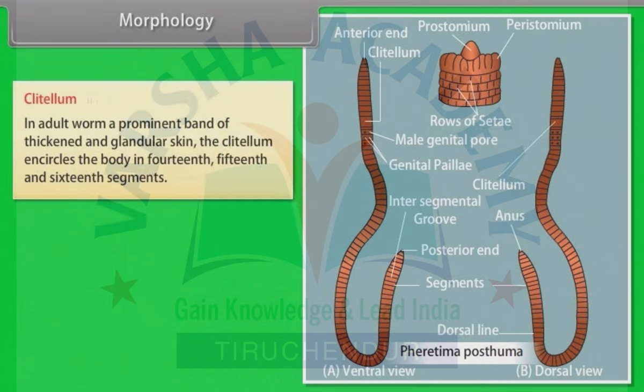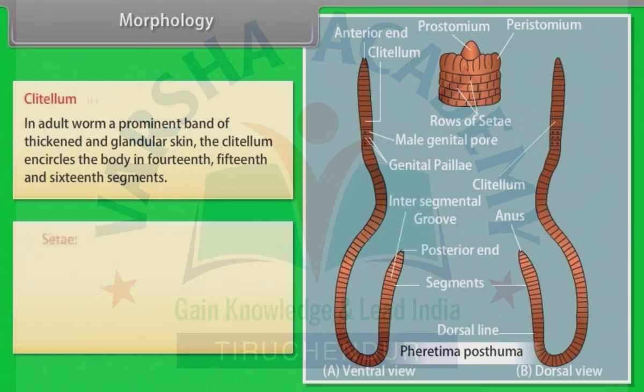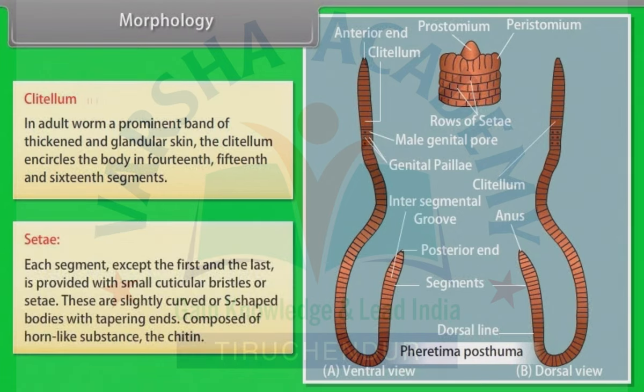Clitellum: In adult worm, a prominent band of thickened and glandular skin called the clitellum encircles the body in the 14th, 15th and 16th segments. Setae: Each segment except the first and the last is provided with small cuticular bristles or setae. These are slightly curved or S-shaped bodies with tapering ends, composed of horn-like substances called chitin.